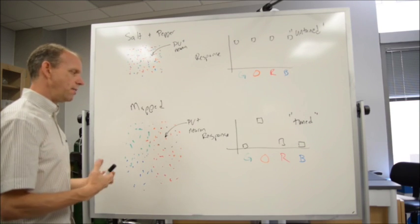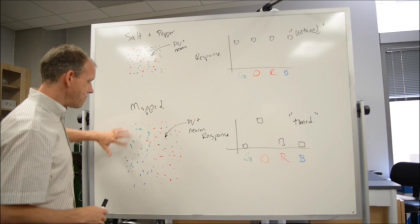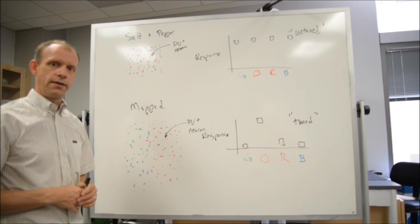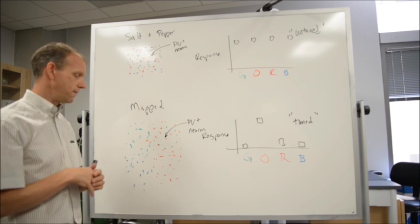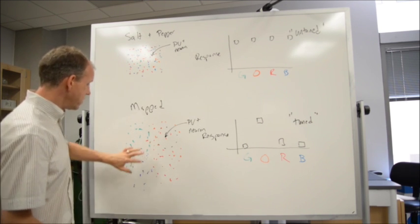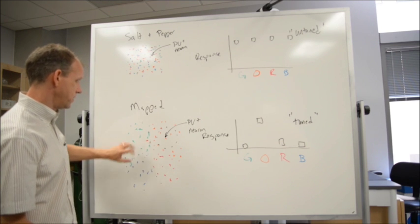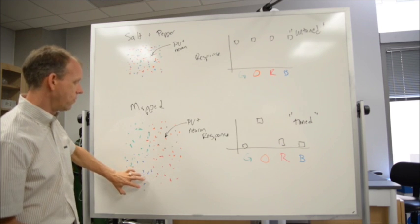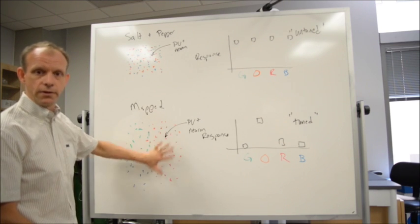In contrast to that, in primates and carnivores, there's actually a mapping that exists for stimulus selectivity across the surface of the visual cortex. That is, the cells that like the green stimulus are over here, and the blue stimulus are over here, the red and the orange stimulus are segregated.